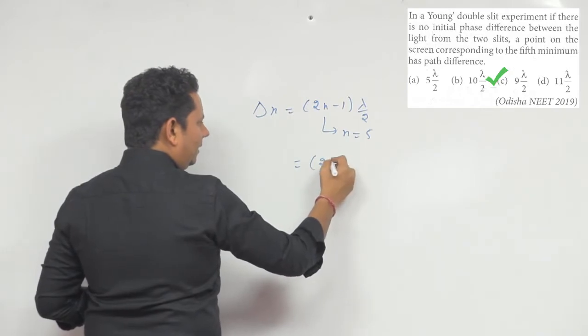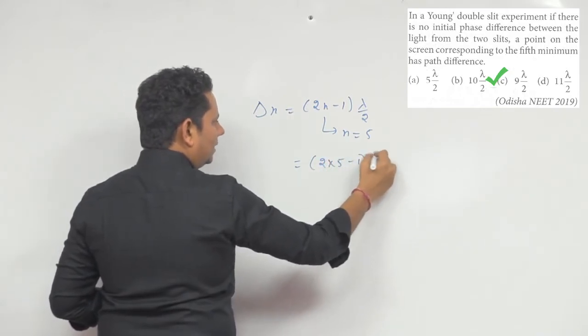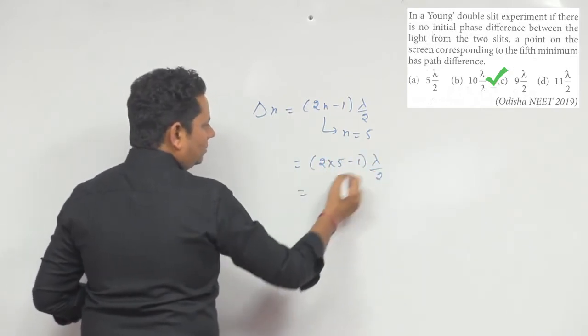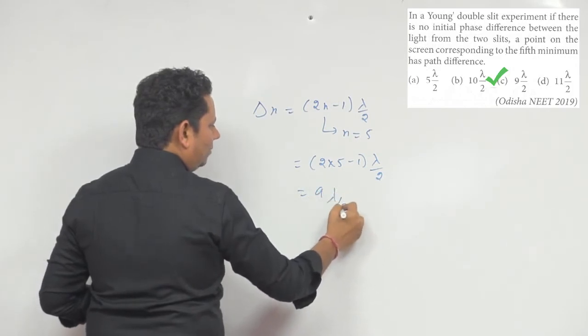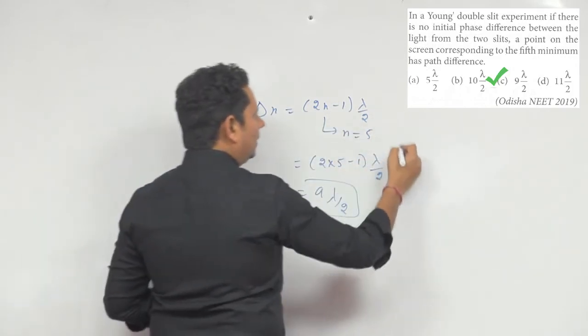So delta x value becomes 2 multiplied by 5 minus 1, times λ/2. This also gives 9λ/2. Both formulas are applicable.